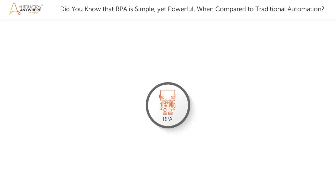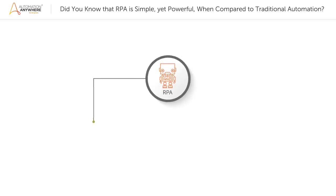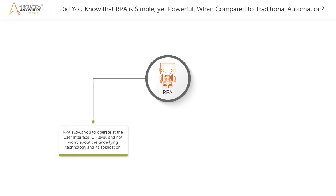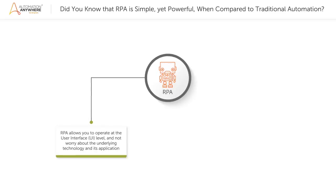Let's now take a closer look at RPA and understand how it is different from traditional automation methods. In traditional automation, programming takes the key role while making use of APIs and other methods. But RPA comprehends the actions of a user at the user interface or UI level, which means the underlying technology and its application takes a back seat.